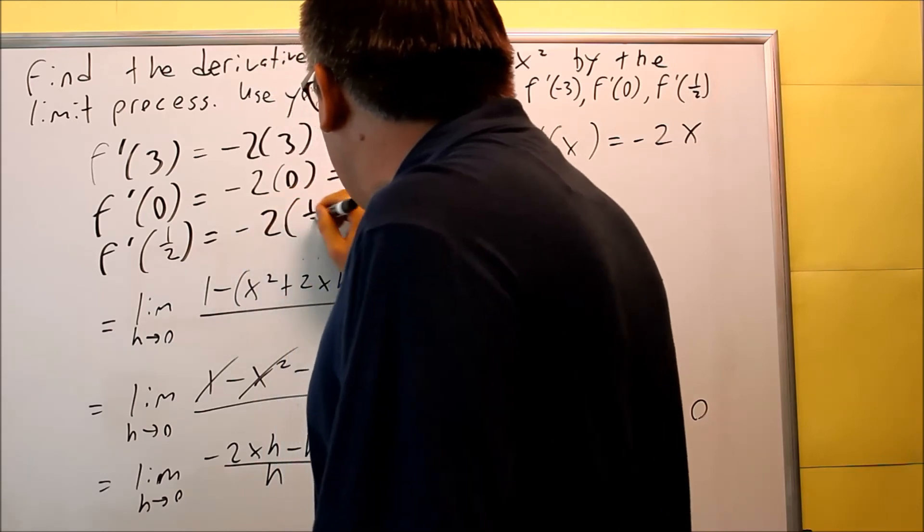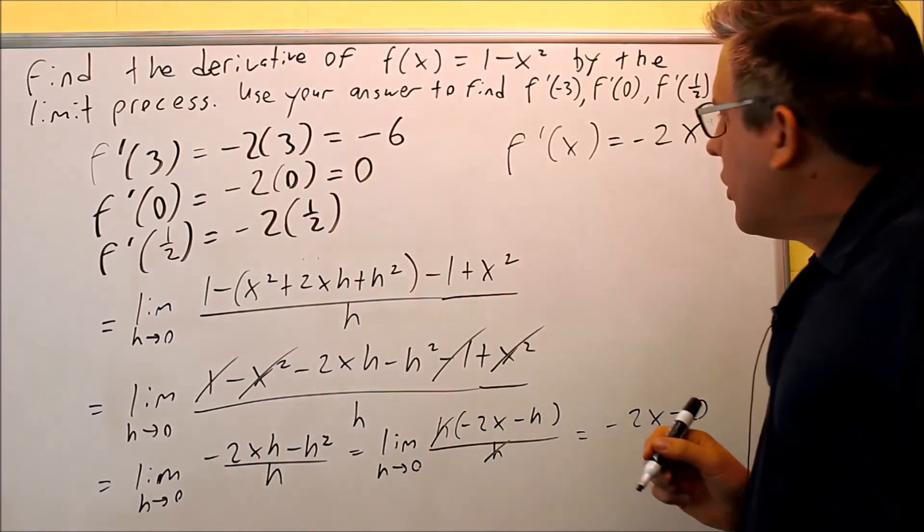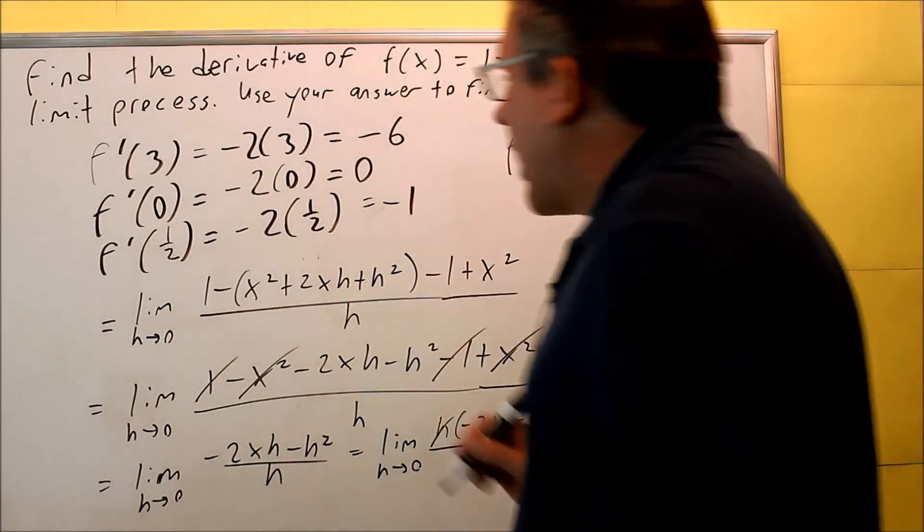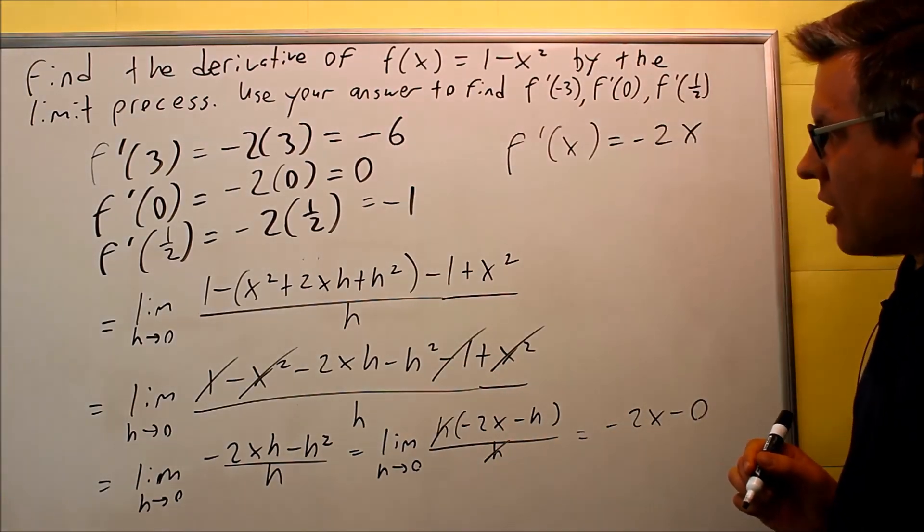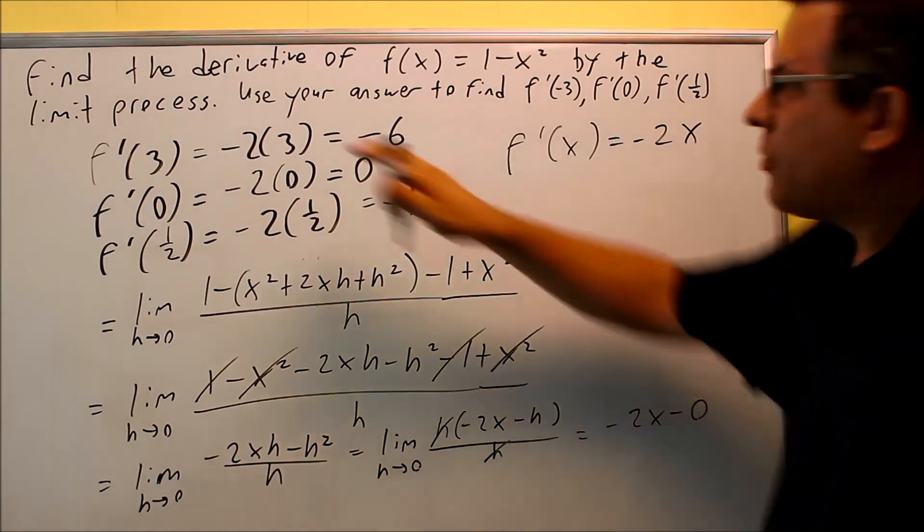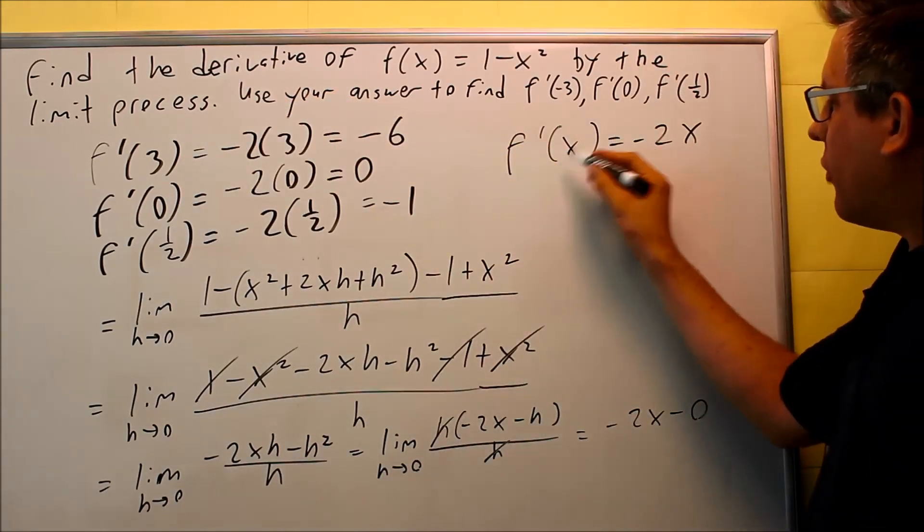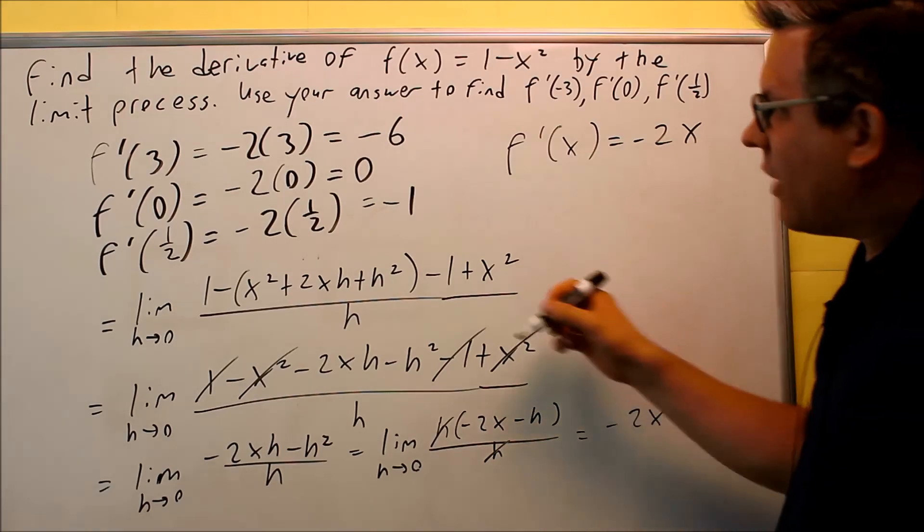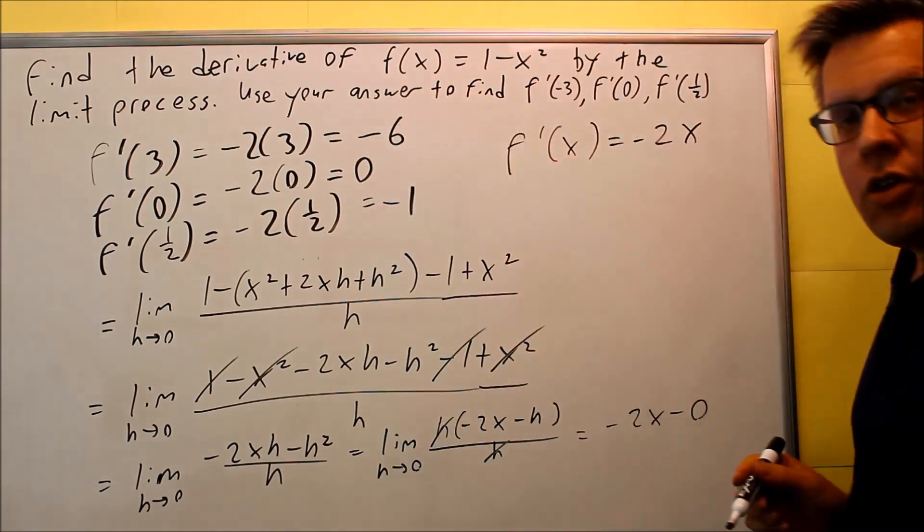Finally f prime of 1 half, putting that in there, negative 2 times 1 half, and that's going to give you negative 1 as the answer. So here's the first part of it: they asked us to find the derivative using the limit process, and we got f prime of x is negative 2x. Then we use that in order to find the other ones.